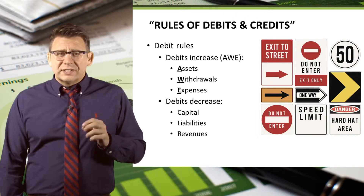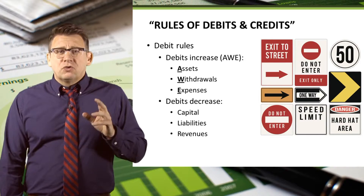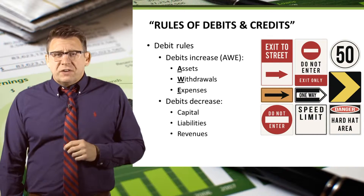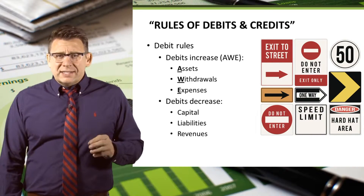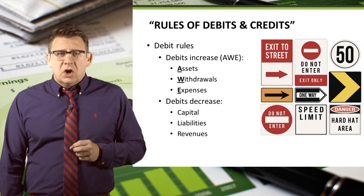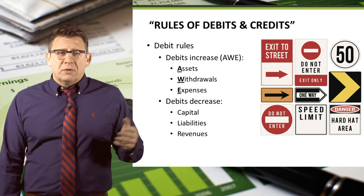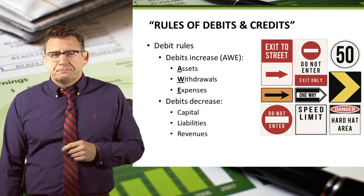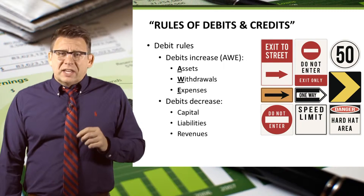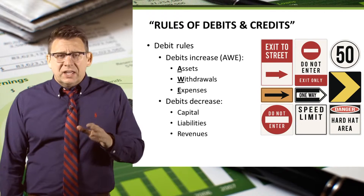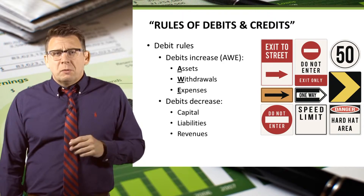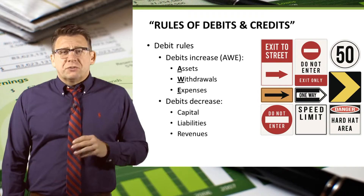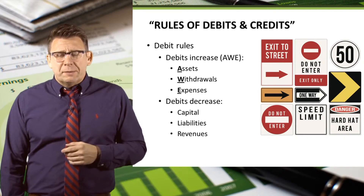Accounting is no different. We have rules that tell us how to account for transactions, and those rules are known as the rules of debits and credits. The debit rules are as follows: assets, withdrawals, and expenses all increase by debits. I remember this with the acronym AWE — debits increase AWE. The normal balance of an account is what we would expect to see in a particular account, and the normal balance is always what increases the account. So the normal balance for assets, withdrawals, and expenses are debit balances.